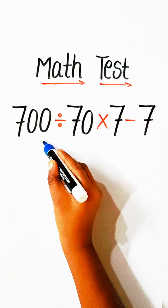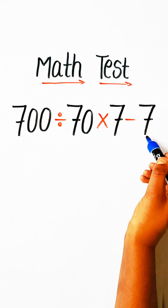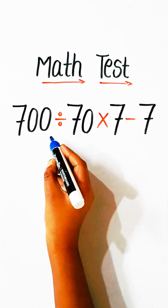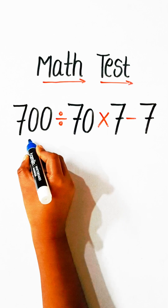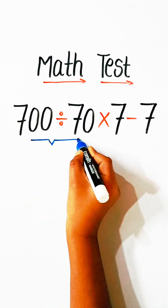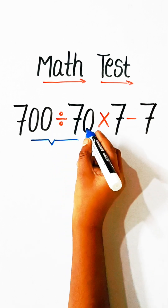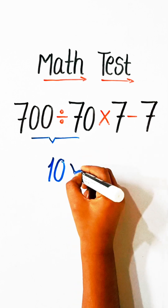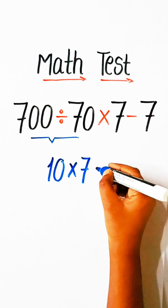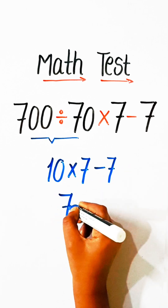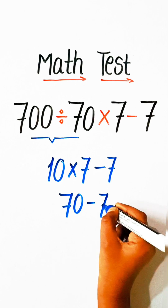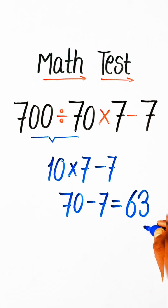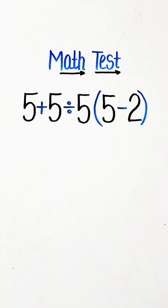Hello everyone, in this video we will try to solve this math expression: 700 divided by 70, multiply by 7, minus 7, equals what. We solve this by dividing first: 700 divided by 70 is 10, multiply by 7 is 70, minus 7 is 63. So 63 will be our correct answer.